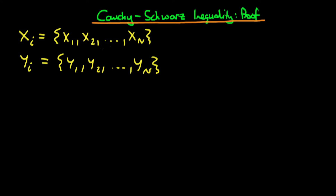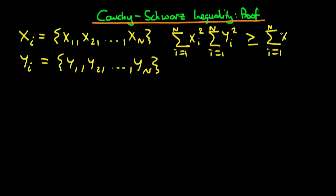After defining both of these sequences, we can write down what the Cauchy-Schwarz inequality says. It says that the sum from i equals 1 to n of xi squared, times the sum from i equals 1 to n of yi squared, has got to be greater than or equal to the sum from i equals 1 to n of xi times yi, all squared. Notice that we're squaring the entire sum on the right-hand side, whereas on the left-hand side we're summing together each of the elements squared.